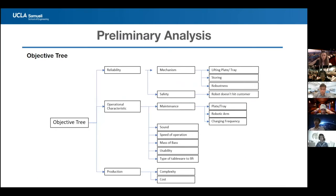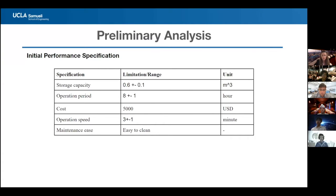Our object tree design captures several characteristics we want the robot to have, including sound, speed, mass, reliability of storing, robustness, and other considerations. Our initial performance specifications look at storage capacity, operational speed, cost, operation period, and ease of maintenance — we want it to be easy to clean.